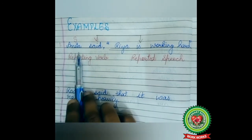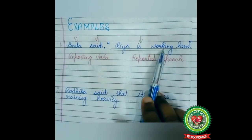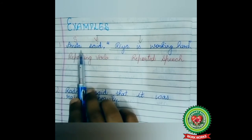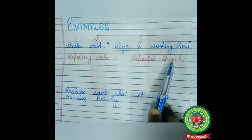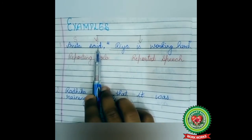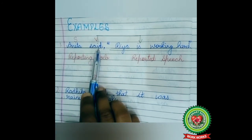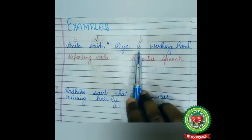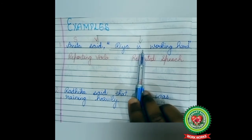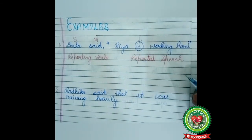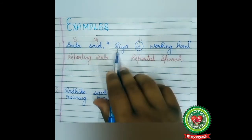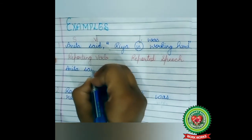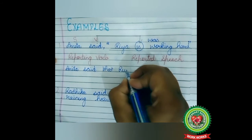Look at example number one. Anita said, inverted commas, 'Rhea is working hard.' Full stop, inverted commas close. This is direct speech and we have to change into indirect speech. Anita said is the reporting verb, and 'Rhea is working hard' is the reported speech. The reporting verb is in past tense, so the tense of the reported speech will change. The reported speech is in present continuous tense, and present continuous tense changes into past continuous tense. The rule is: was/were + verb + ING. Rhea is a singular subject, so we use 'was.' Our answer is: Anita said that Rhea was working hard.